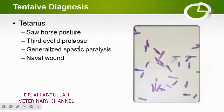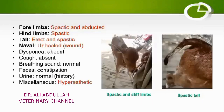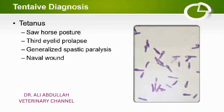Third eyelid prolapse is also a very typical sign of tetanus. Generalized spastic paralysis of the whole body is also very typical for tetanus. Finally, the navel wound is a very hot spot for the entry of the tetanus bacterium, Clostridium tetani, which enters through the navel wound and goes into the body, where it produces toxins.